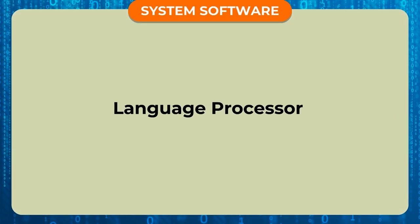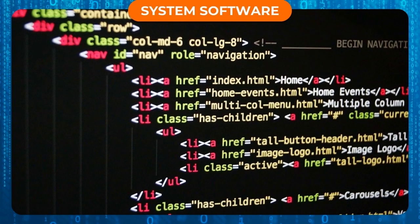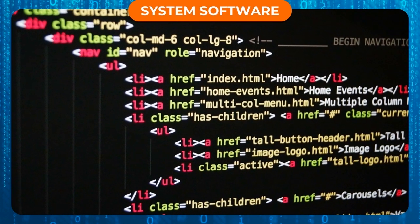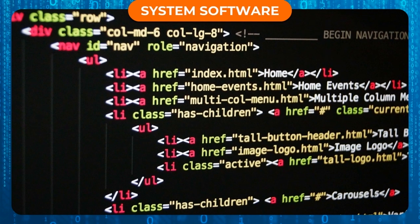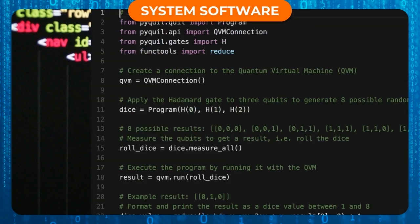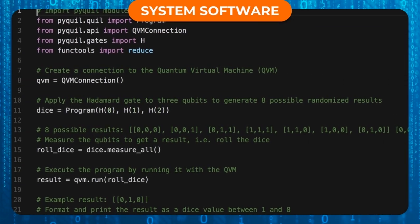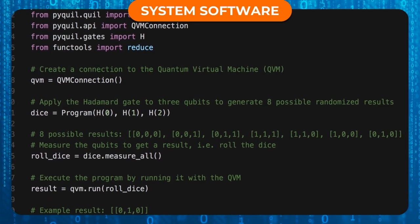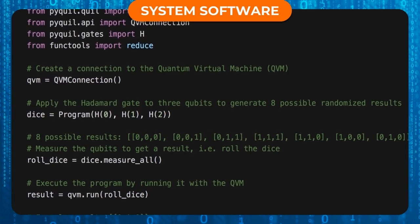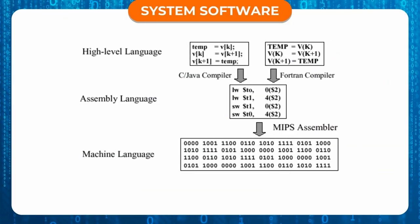Language Processor: When any computer program is executed, it is translated into machine language first, before its execution. Thus, a Language Processor or Translator converts the program into machine language before execution.